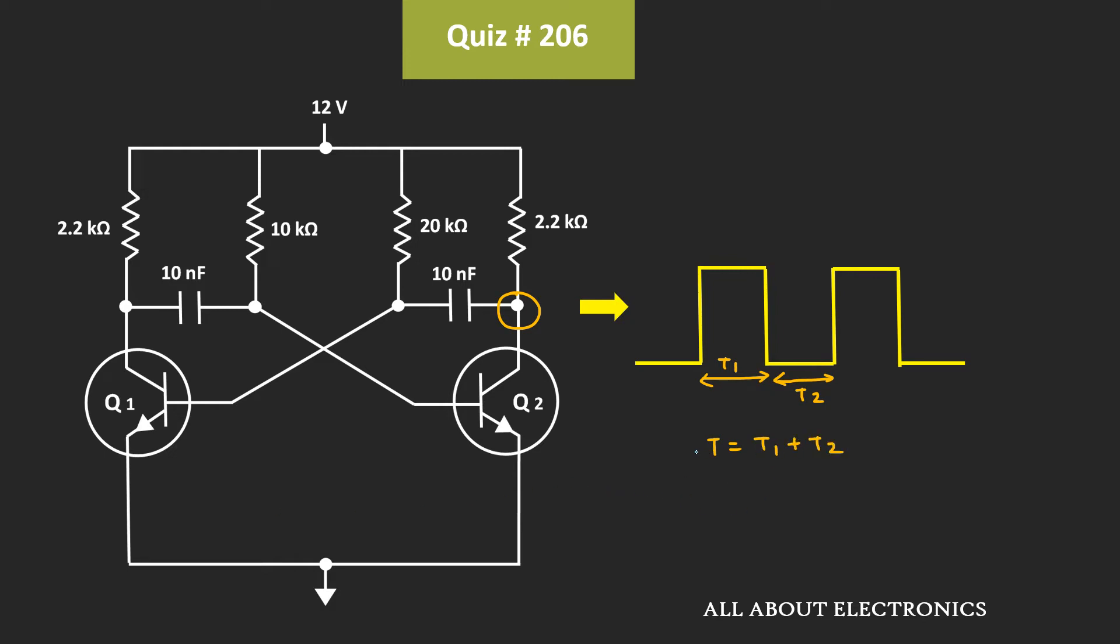And here, the time for which it remains in one particular state depends on the values of this capacitor as well as the base resistors. So, this total time period T can be given as 0.693 times Rb2 times C1 plus Rb1 times C2.